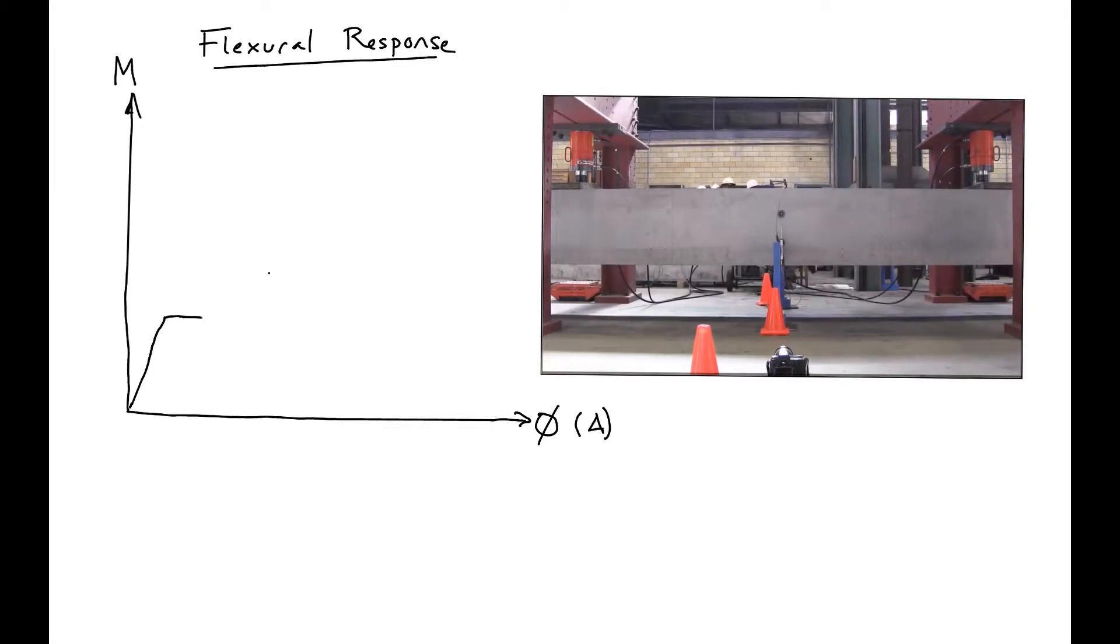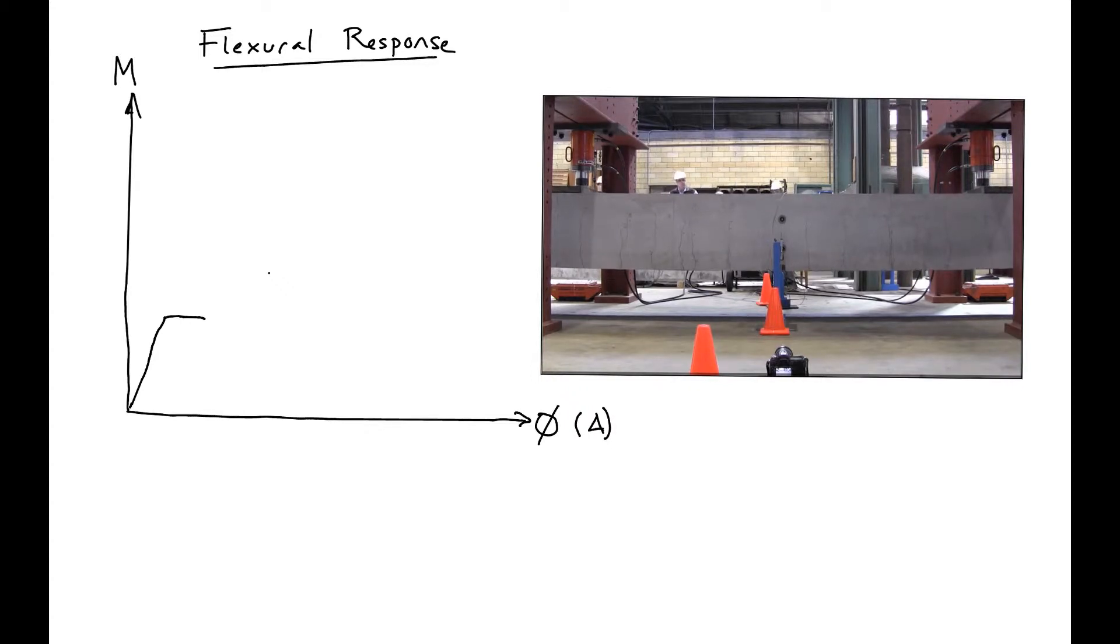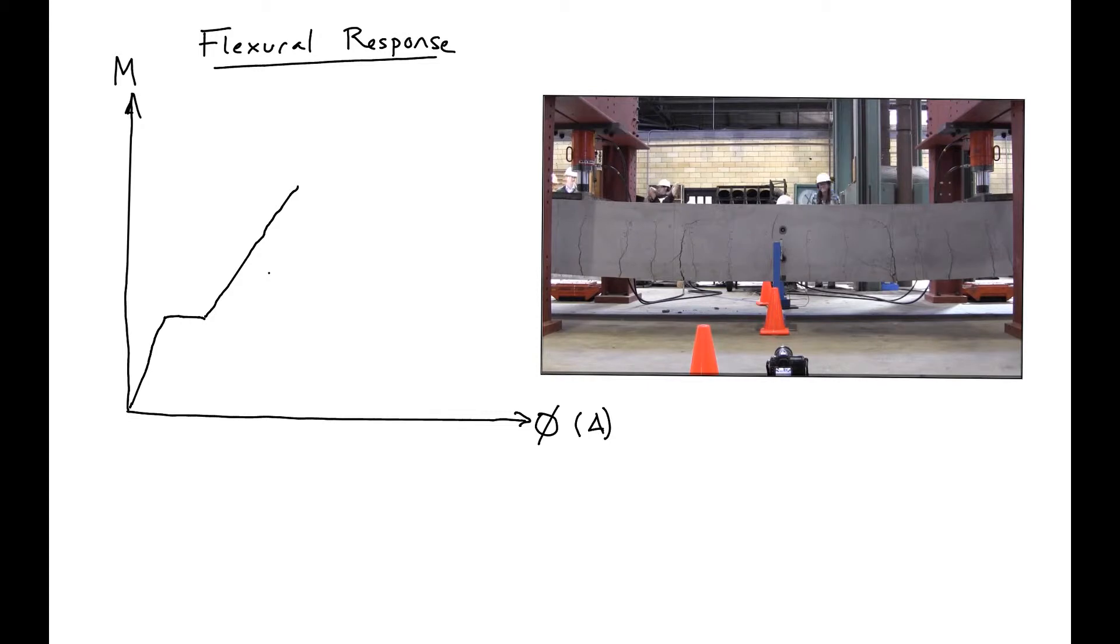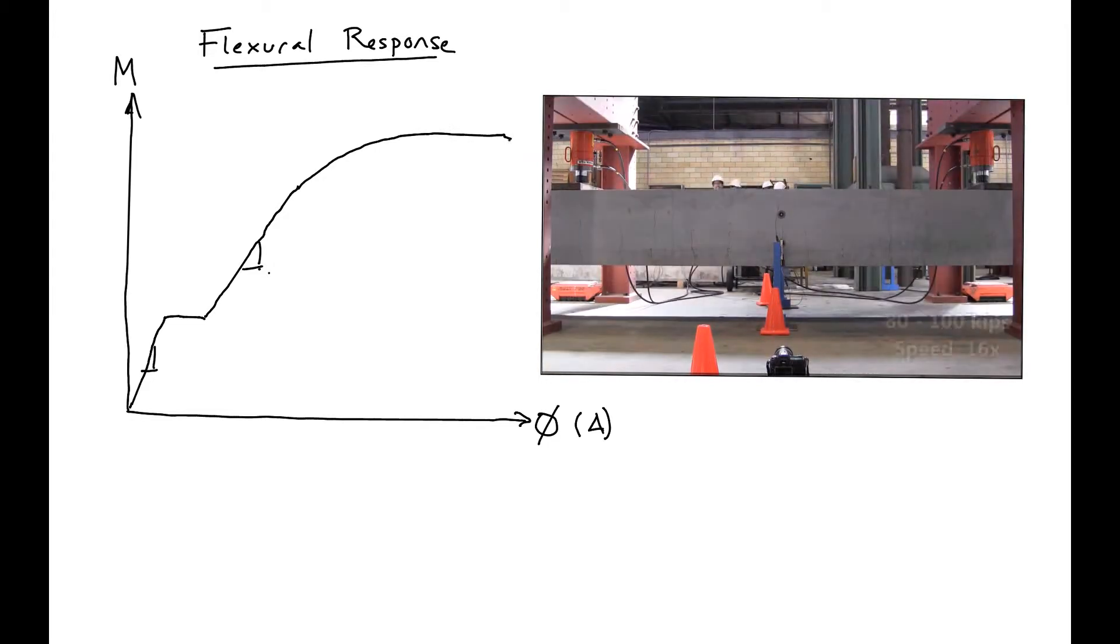We'll have some cracking then. At cracking we'll have some additional deflection without any additional moment as the steel engages, and then we'll have some additional moment with a different slope. Finally it's going to start curving off until we reach our failure load.